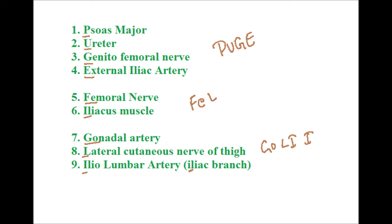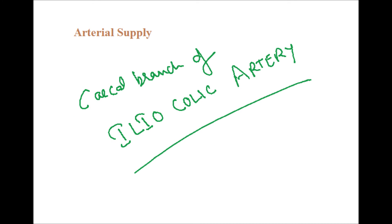P is for psoas muscle, U is for ureter, J is for genitofemoral nerve, A is for external iliac artery. FEL stands for femoral nerve, iliacus muscle. GOV is for gonadal artery, and LWI is for lateral cutaneous nerve of thigh, iliolumbar artery, and the iliac branch.